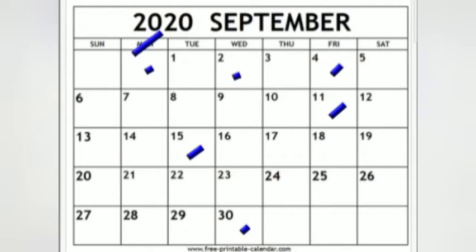What is the special day in this month? That is 5th September — Teacher's Day. Teacher's Day comes on which day? That is Saturday. What is the last day of this month? The last day is Wednesday, 31st. The next month starts on Thursday.